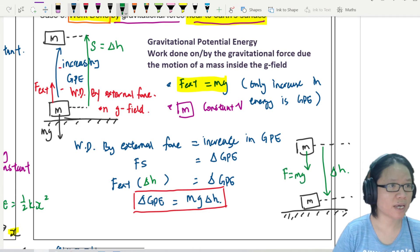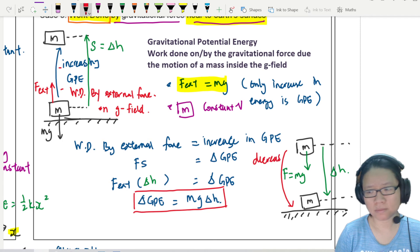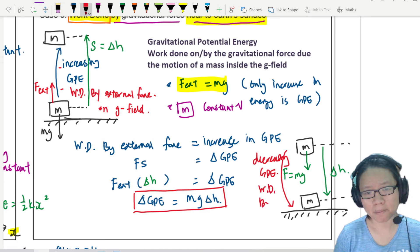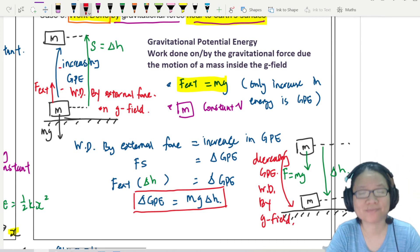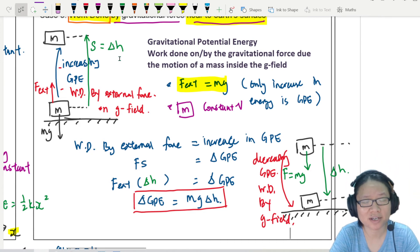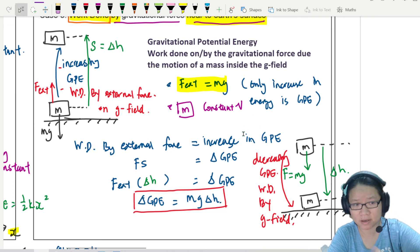So in this case, because you're talking about decreasing GPE, so this is work done by gravitational field. Gravity do the work to accelerate the object down. That's the working idea. If you want to increase the energy, you got to do external work. But once you push it up, gravity is very happy to bring it down.